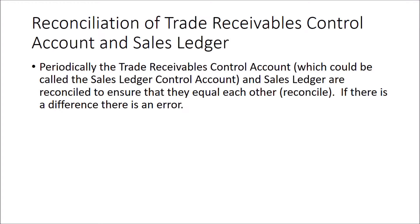The trade receivables control account - which may also be called the sales ledger control account by the examiner - and the sales ledger are reconciled periodically to ensure they equal one another. If they don't reconcile, there's an error in either the general ledger control account or the sales ledger subsidiary accounts. In real life this requires reviewing postings from the day books to identify where the discrepancy occurred. In an exam, errors will be presented with potential scenarios that could have created them.